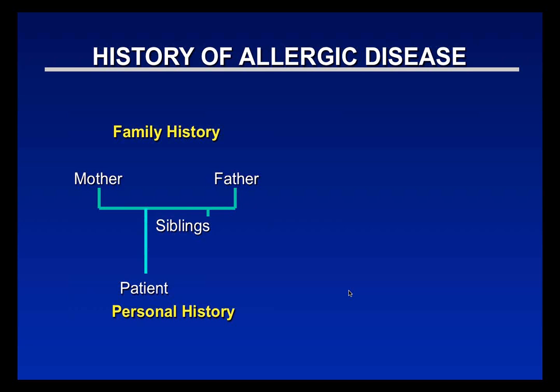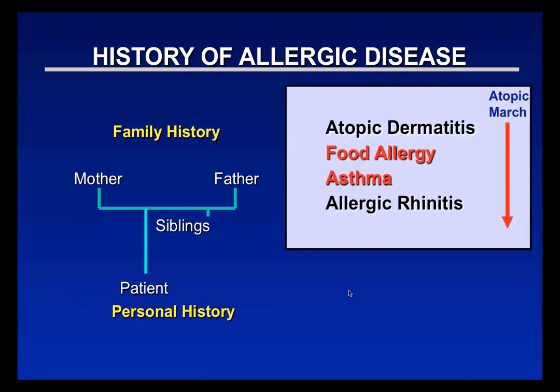Family history is important: having a parent or sibling who is allergic increases your risk of food allergy. There is also the atopic march — many children develop eczema within the first three months of life, then food allergy, followed by wheezing with viral illness and sensitization to animals, often all before age three. Between ages three and seven, seasonal allergen sensitization occurs, leading to seasonal allergic rhinitis. Allergic rhinitis before age three is typically due to constant exposures like dust mite or animal dander.